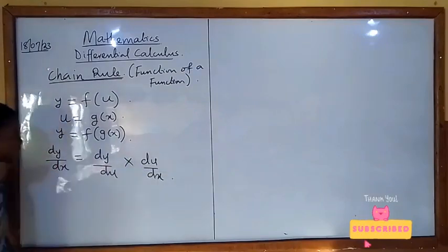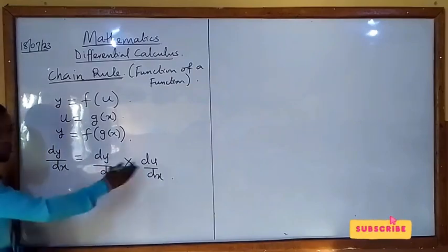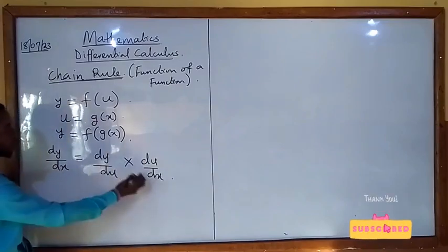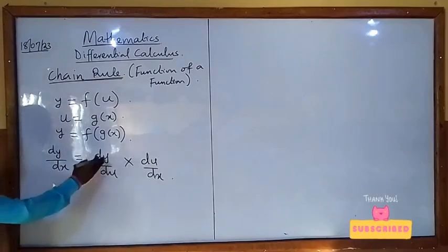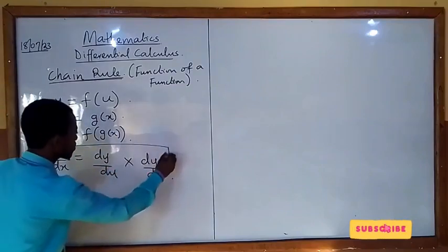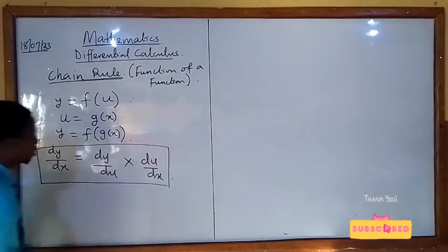When you look at this, you'll discover that when you multiply these two, du can cancel du, and what you have is dy/dx. So dy/dx equals dy/du times du/dx. This formula is equivalent to the chain rule of derivative.